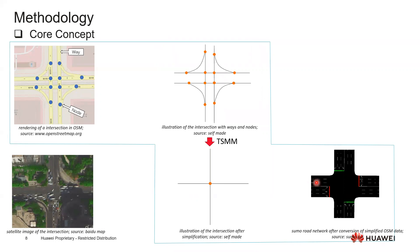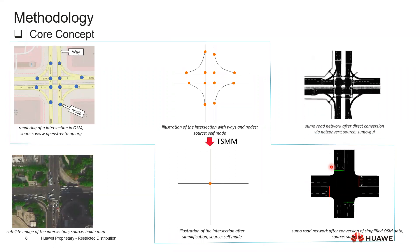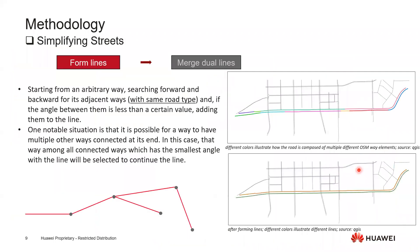I use 'correct' because this is not exactly the same as the real world, but for our demand if we just want to make it similar as the real world, it achieves our goals. If we compare to the direct conversion, we can find the improvement that our tool can achieve. This is the core concept - we basically want to merge the dual lines together to just use one line to represent the road and one node to represent the intersection.